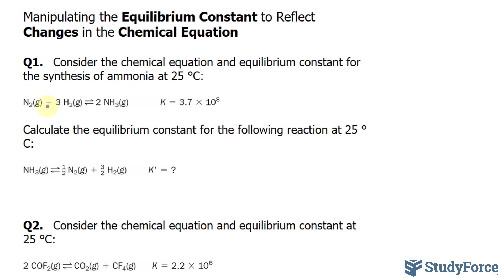Given that this reaction has reversed, the way that's reflected on the equilibrium constant is you reciprocate it, where it becomes 1 over 3.7 times 10 to the power of 8. So that conversion reflects the reversal of the reaction.